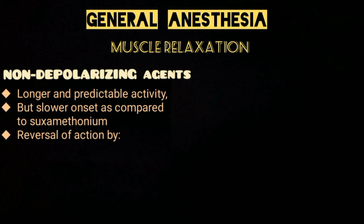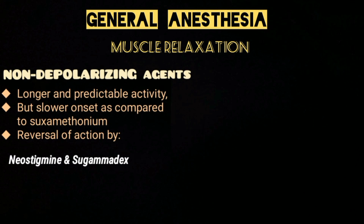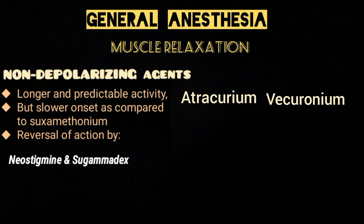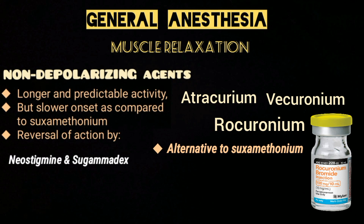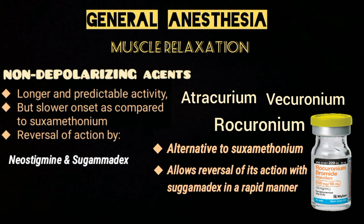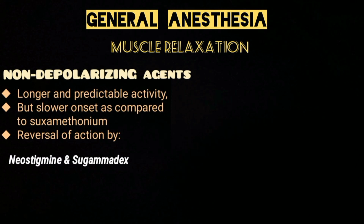Non-depolarizing muscle relaxants provide longer and more predictable activity but have a slower onset compared to suxamethonium. They also require reversal of their action by agents such as neostigmine or sugammadex at the end of the procedure. This group includes atracurium, vecuronium, and rocuronium. Rocuronium is an alternative to suxamethonium as it allows rapid reversal of its action with sugammadex.